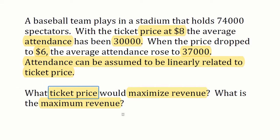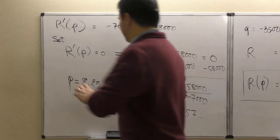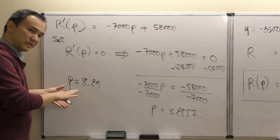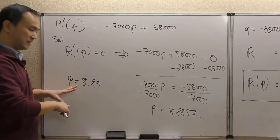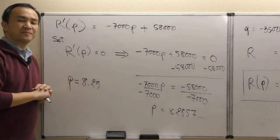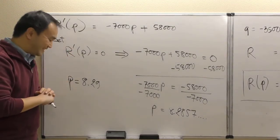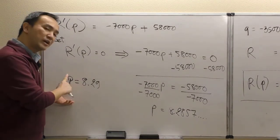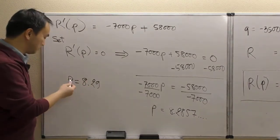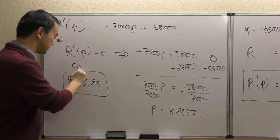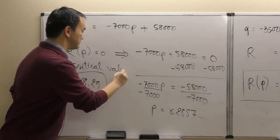The question asks: what ticket price would maximize the revenue? Right now we have only found a critical value at this ticket price — it could be a minimum, a maximum, or neither for our revenue function. We need a test to decide whether we have a maximum or minimum revenue at this critical value. I highlight this as the critical value.